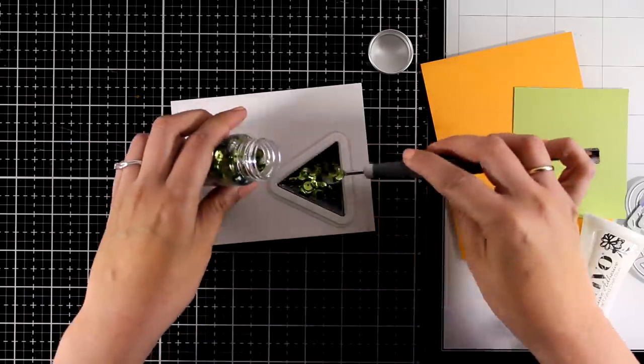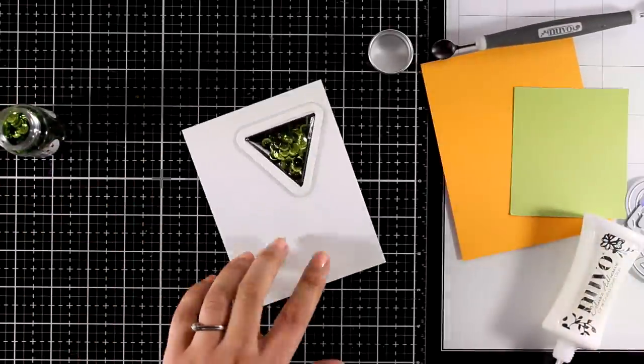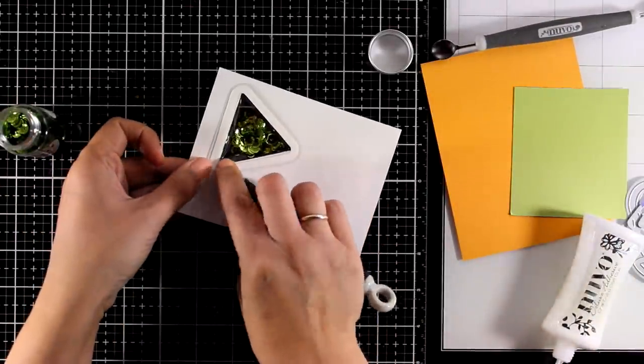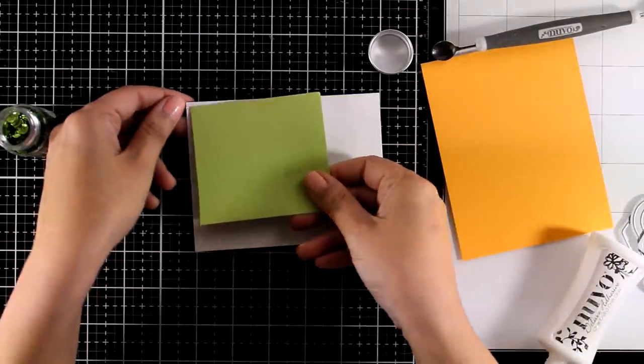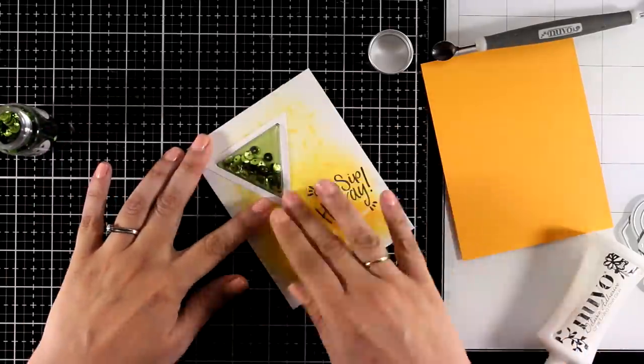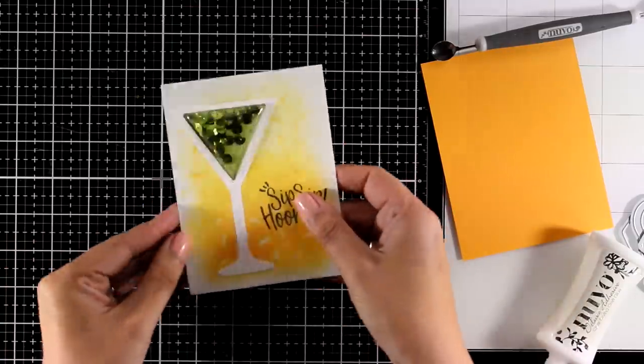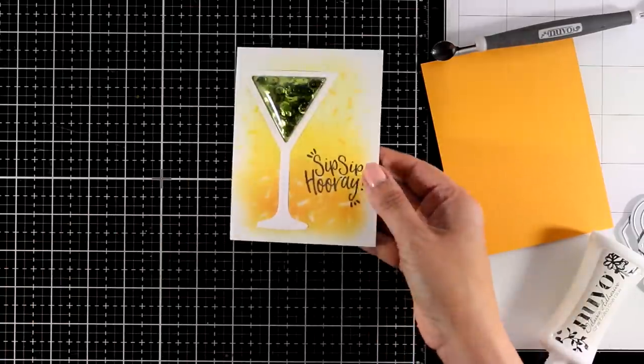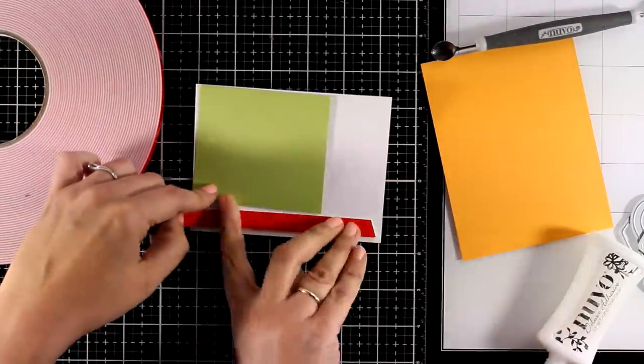The sequins that I'm using here are quite big. The color is Prickly Pear, again by Nouveau. And you can see again a generous amount. I'm going to peel off the backing and place a scrap piece of green cardstock. And finally I'm going to stick this panel with foam tape at the back on a piece of yellow cardstock which matches perfectly the colors of my background.